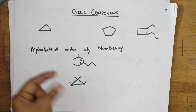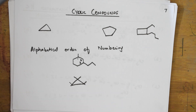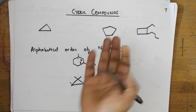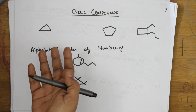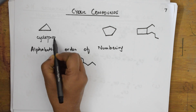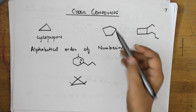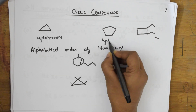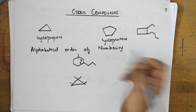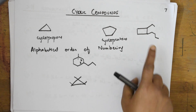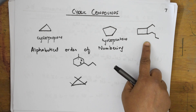When naming cyclic compounds, the prefix 'cyclo' is used, followed by the parent chain name. For example, a ring with three carbons is cyclopropane. A ring with five carbons is cyclopentane. That is the basic naming rule.